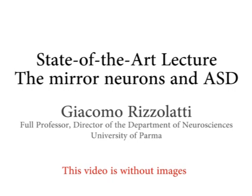We know now that mirror neurons are present in birds, in monkeys, and in humans. And in primates, they are present in several areas — in different parietal and frontal areas, as well as in emotional centers like the insula and anterior cingulate. That changed radically our view of mirror neurons. Originally we spoke about a mirror system, and that was also a point of discussion: how can a mirror system underlie so many different functions?